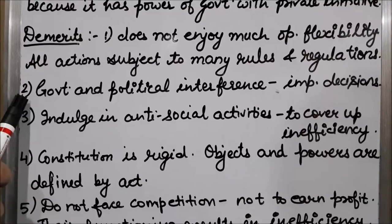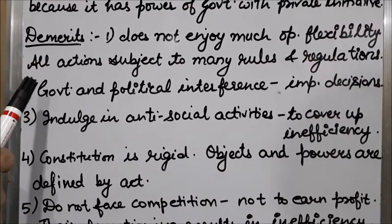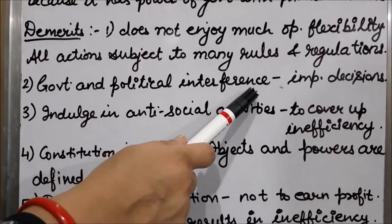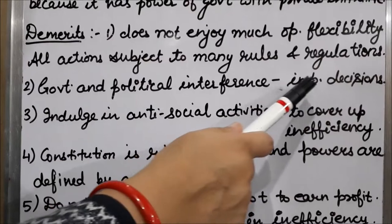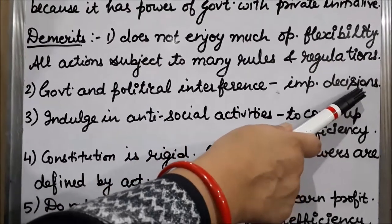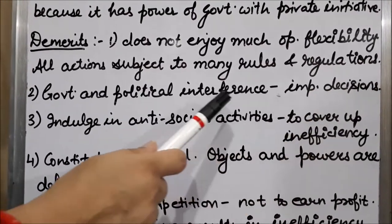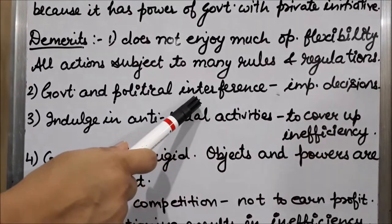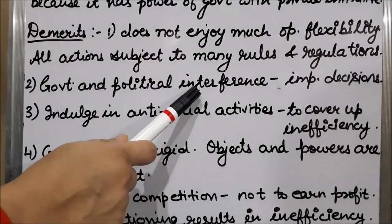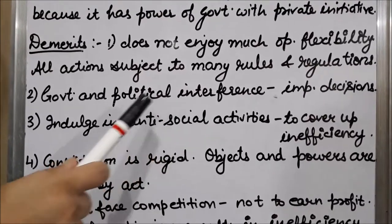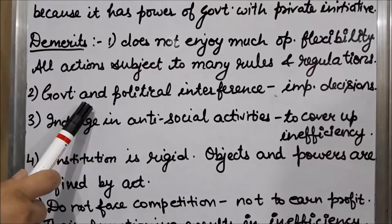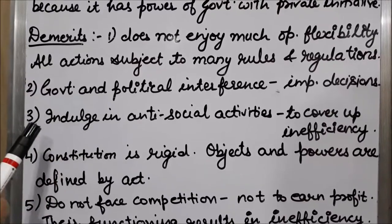The second demerit is that there is government and political interference in important decisions. When decisions involving large amounts of funds are taken, the government interferes.